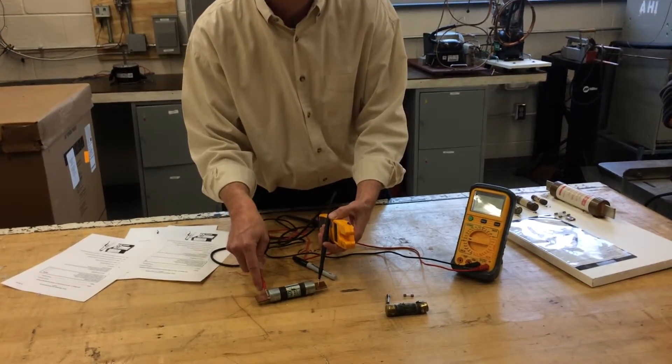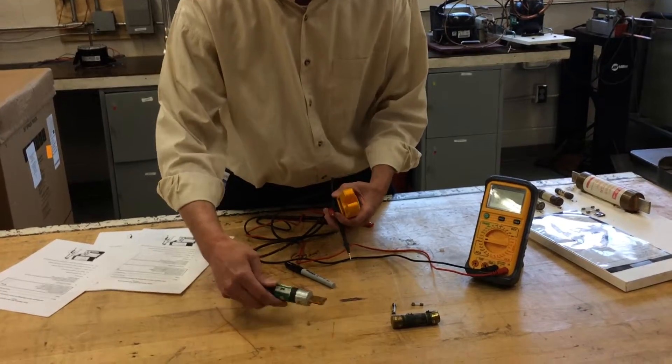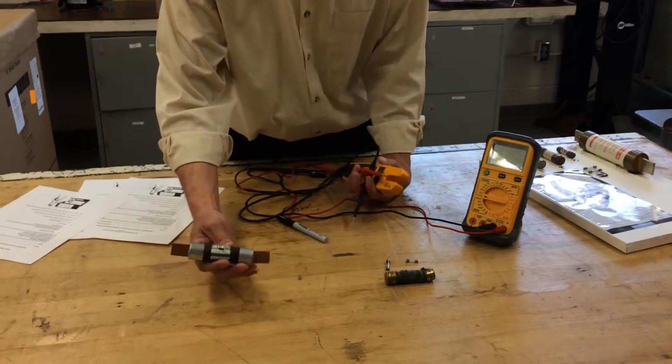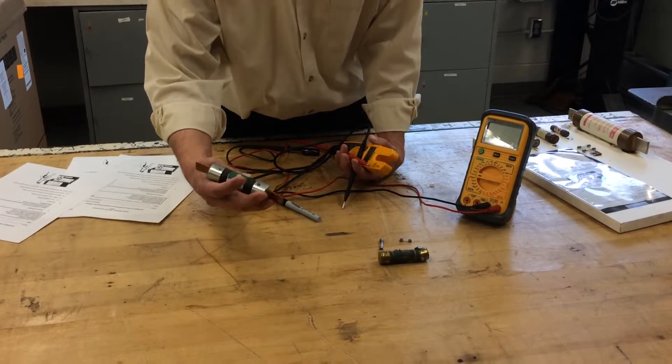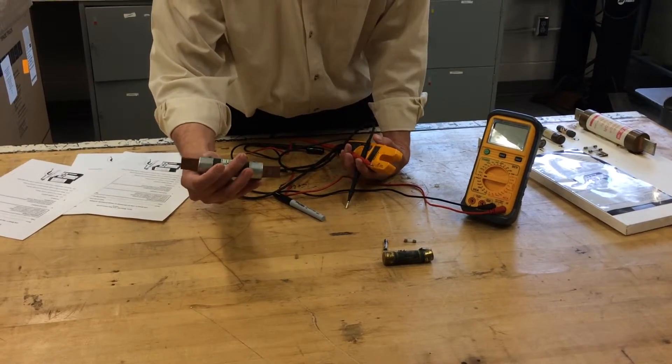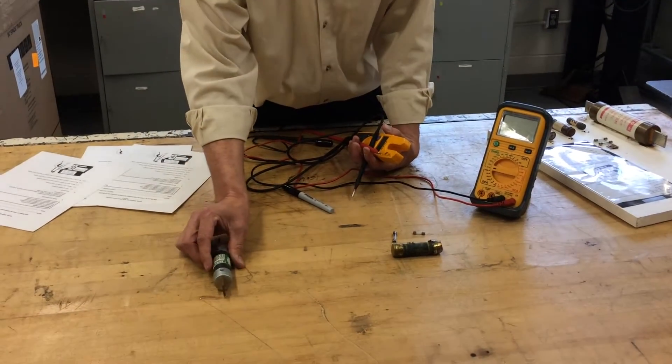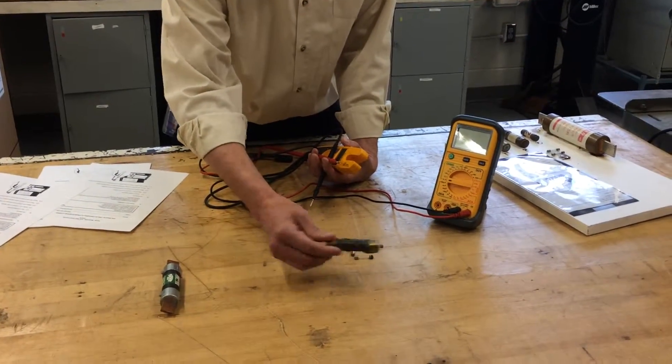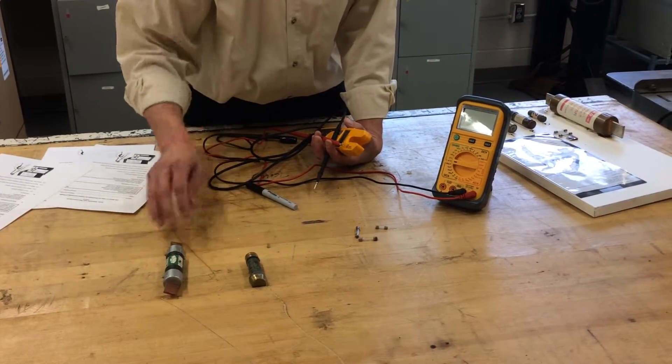So that fuse is usable. We can use that one. And they come in different ratings. Like this one here is a 250 volt - that can handle up to 250 volts or less. And then the amperage on it is 100 amps. So that can take a lot more amps than this one here that was a 40 amp, 240 volts.